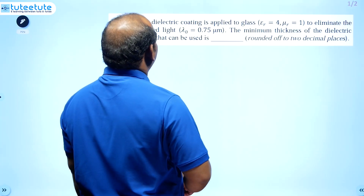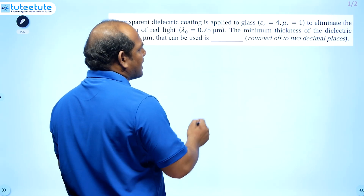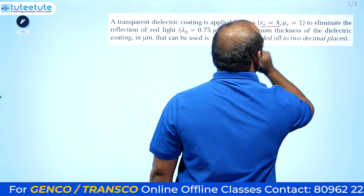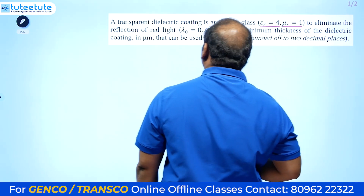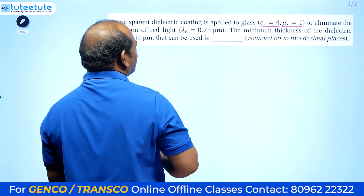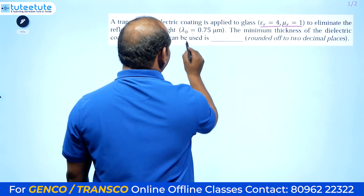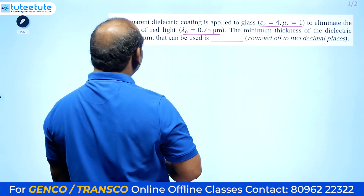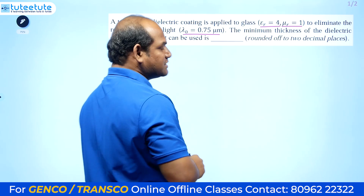A transparent dielectric coating is applied to glass which has relative permittivity εr = 4 and relative permeability μr = 1, to eliminate the reflection of red light having a free-space wavelength of 0.75 micrometers. The minimum thickness of the dielectric coating in micrometers that can be used is to be determined.